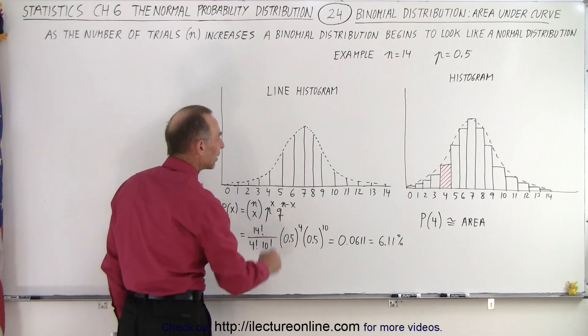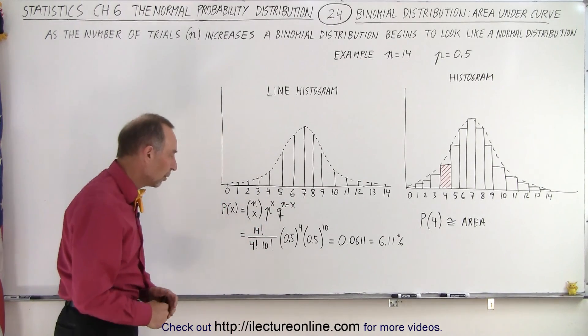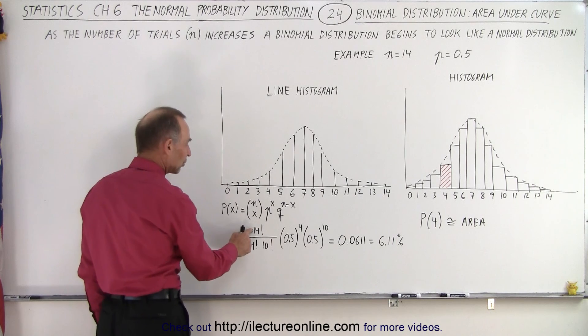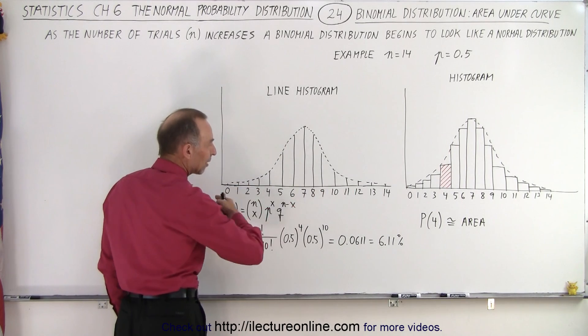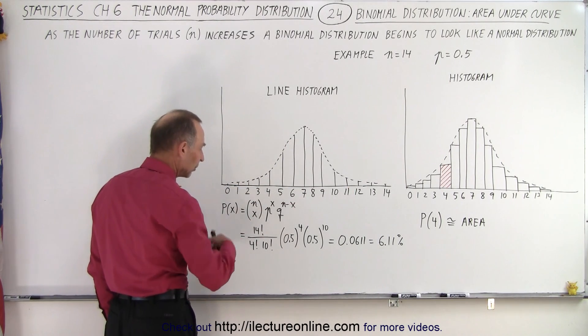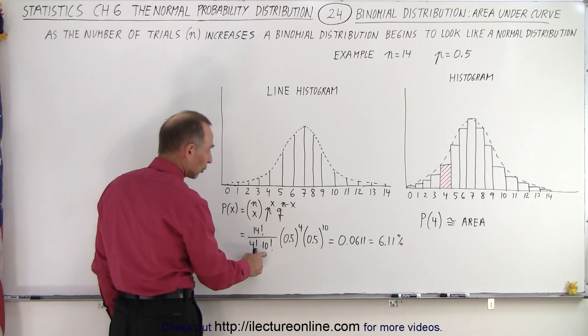This is raised to the n minus x exponent. So this is 14 factorial because we have 14 trials, and we divide that by 4 factorial and 10 factorial.